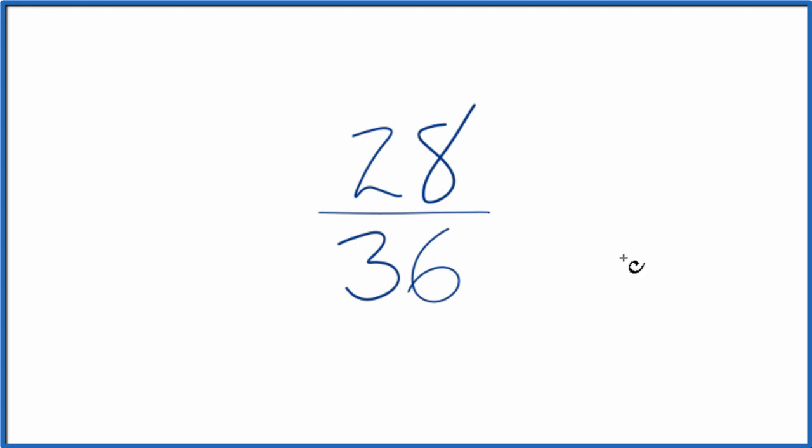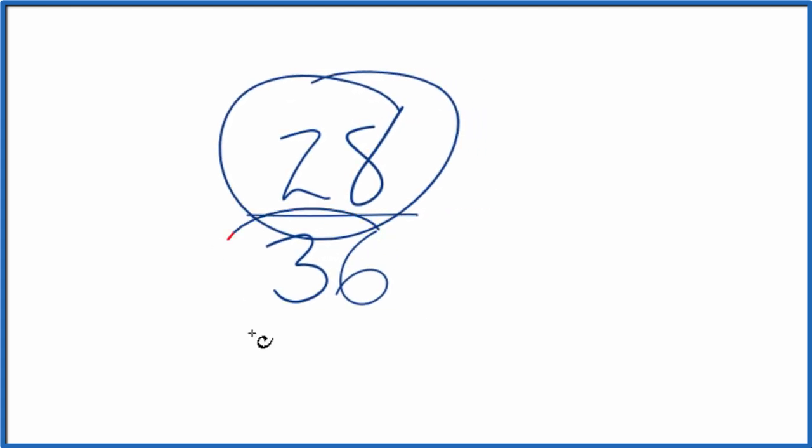To do that we need to find a common factor, something that goes into 28 and 36 evenly. So let's write the factors for 28 and 36.